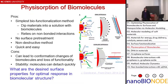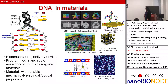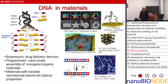So the biggest question in physisorption is: what are the desired surface properties that will give you control over the secondary structure or a property of the biomolecule? That's what we are interested in. For the first part, we are going to look at DNA molecules. My group likes working with DNA — it's used in a variety of material science projects.